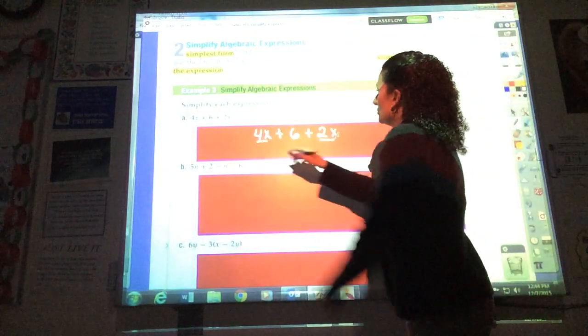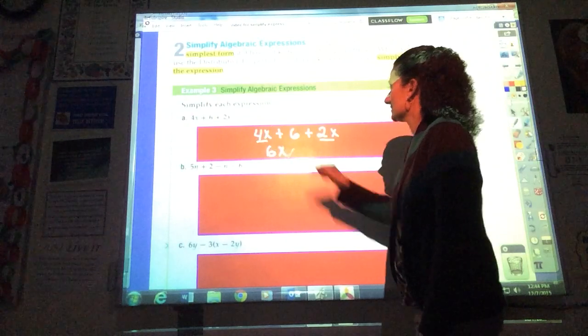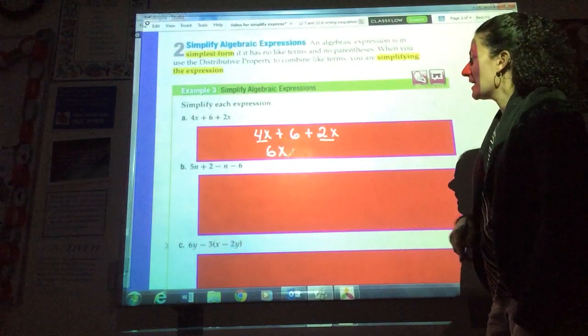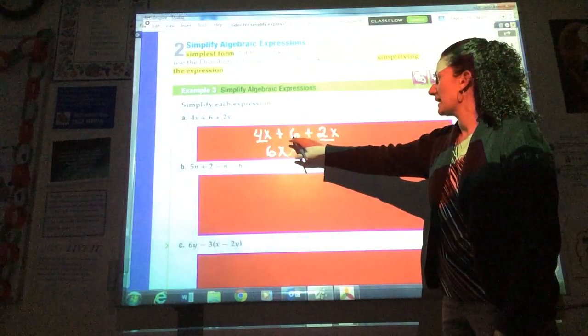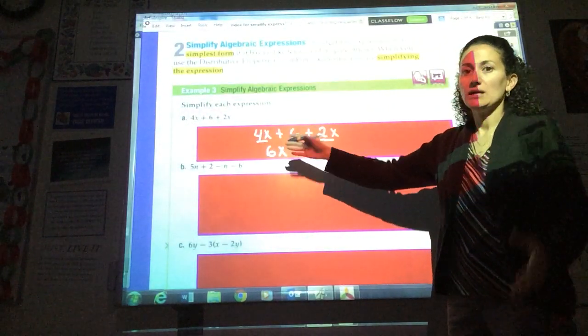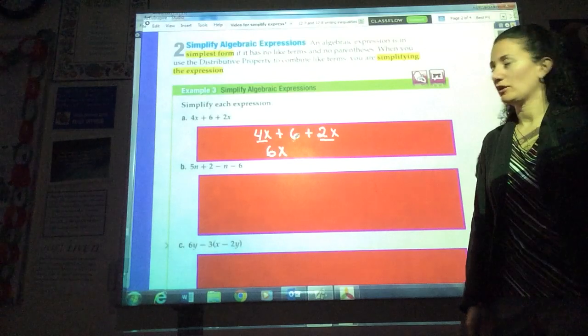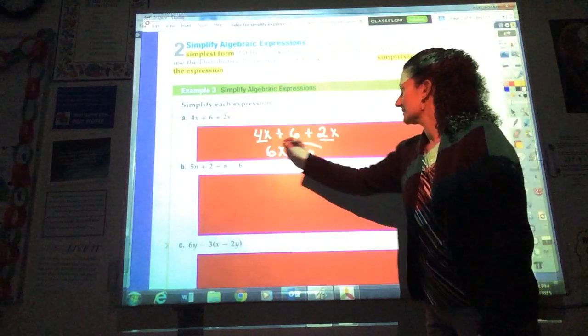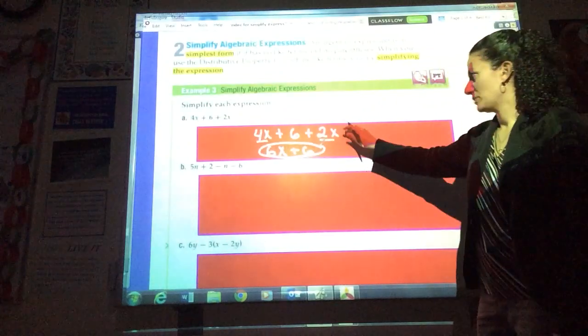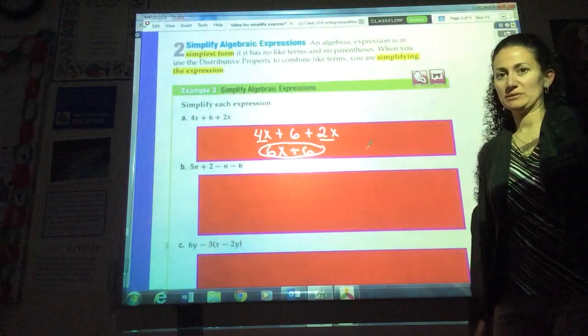We can add the coefficients or the numbers in front of those variables. So we can add 4 plus 2 and that gives us 6x. If there were any other constants, I could add them to the 6, but I have no other constants or numbers that stand alone without a variable. So my final answer is 6x plus 6. I just put that expression into simplest form or simplest terms.